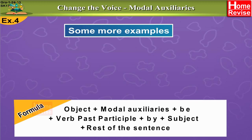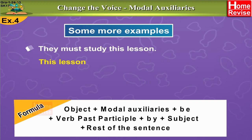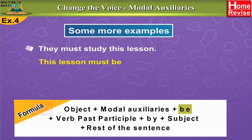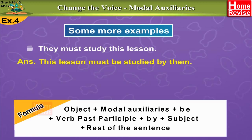Let's take one more example. 'They must study this lesson.' What must they study? — This lesson. So 'this lesson' is the object. Begin the sentence with 'this lesson,' followed by the modal auxiliary 'must,' followed by 'be,' and the past participle of 'study' is 'studied,' by 'them' — the objective case of 'they.' So the answer is: This lesson must be studied by them.